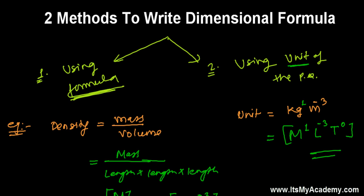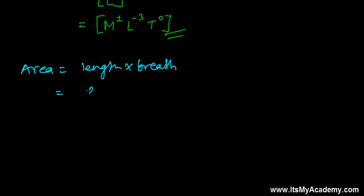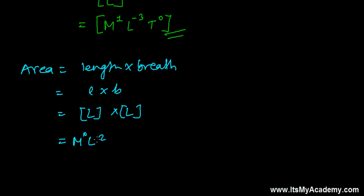Let me give you one more example — area. What is area? That's length into breadth, written as L into B. Length is L, breadth is also L, because both represent distance. So it's L squared. So M will be zero, L is two, and T is zero.